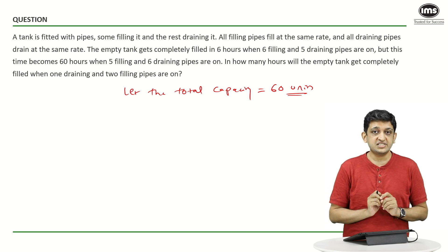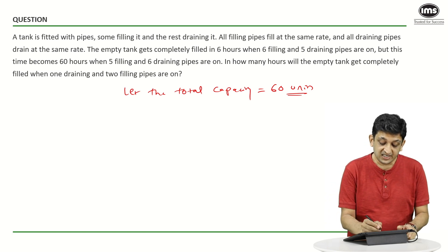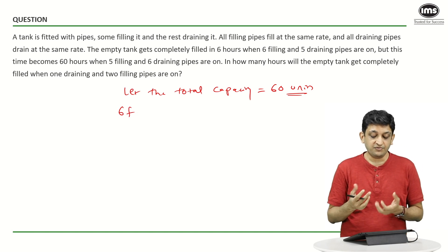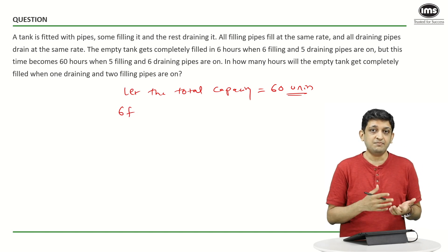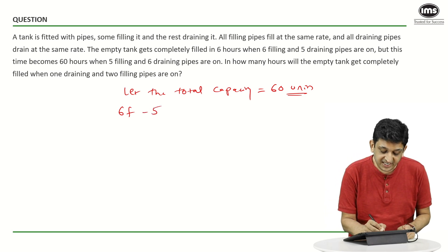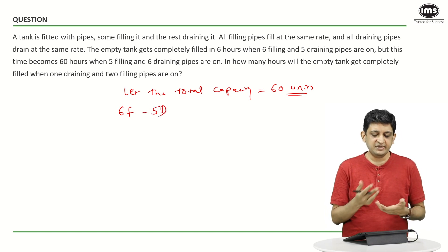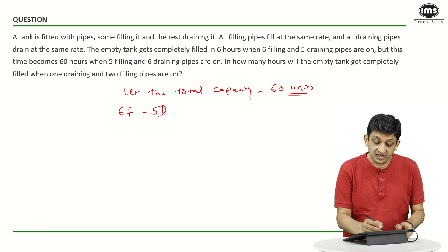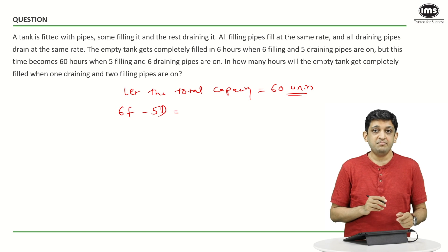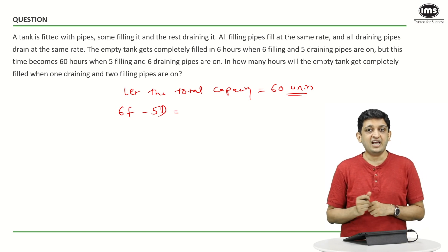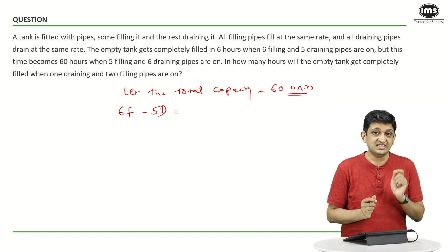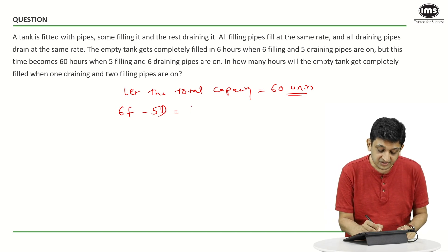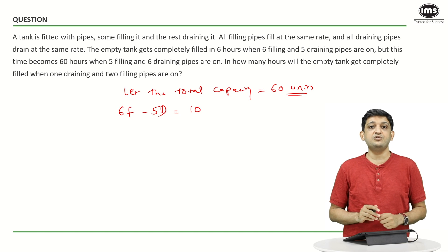So, what can we observe from the 60 units bit? We can see that when you have 6 filling pipes, let F be the amount of water that is filled into this tank per hour by a filling pipe and 5 draining pipes are operational. Let D be the amount of water that is drained out by each pipe per unit time. 6F minus 5D will mean how many units of work per hour have been done. This entire thing is happening in 6 hours. So, 60 units in 6 hours or it is working at an efficiency of 10 units per hour.